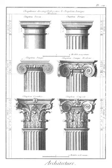Bracket: weight-bearing member made of wood, stone, or metal that overhangs a wall. Breast summer (literally: breast beam): large horizontal beam supporting the wall above, especially in a jettied building.